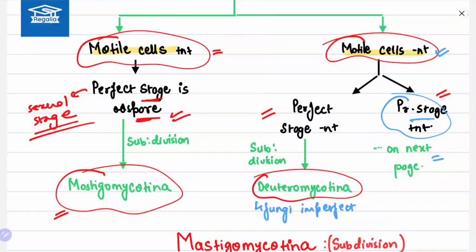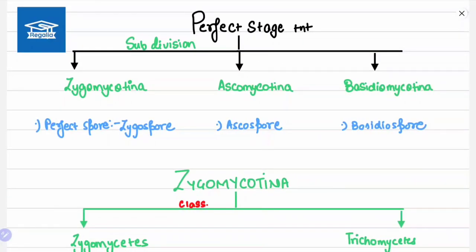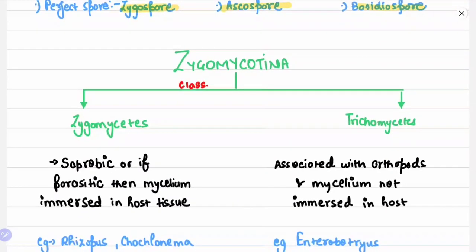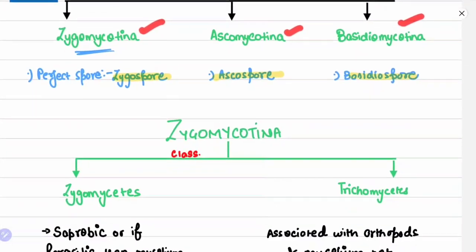Under motile cells absent and perfect stage present, there are three types of subdivision: Zygomycotina, Ascomycotina, and Basidiomycotina. In Zygomycotina, as the name suggests, the perfect spore is a zygospore. In Ascomycotina, it is an ascospore. In Basidiomycotina, it is a basidiospore.